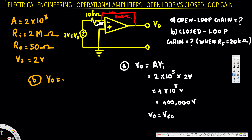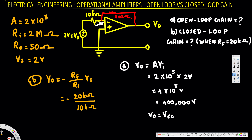Since this is an inverting amplifier, we use the equation: V_out equals negative R_f divided by R_1, times V_s. R_f is 20 kilohms. The input resistance R_1 — not the 2 megaohm resistance between the terminals, but the series input resistor — is 10 kilohms. So V_out equals negative (20k / 10k) times 2 volts, which gives negative 4 volts.